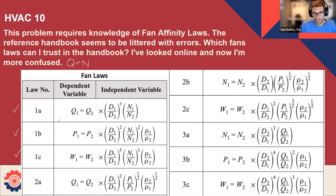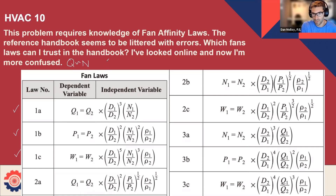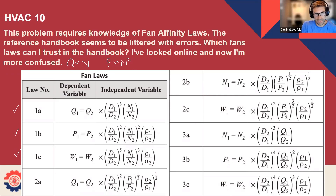How about the pressure? Jumping down to 1B. Keeping the diameter the same, the pressure is proportional to speed squared. Pretty much what we would expect. Pressure is proportional to speed squared, and we also have some interaction with the density.